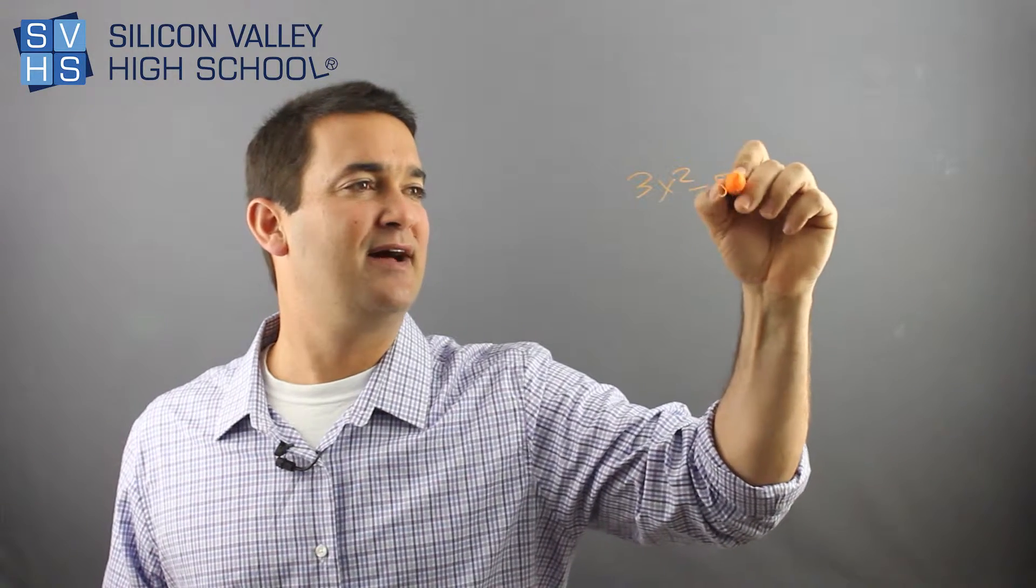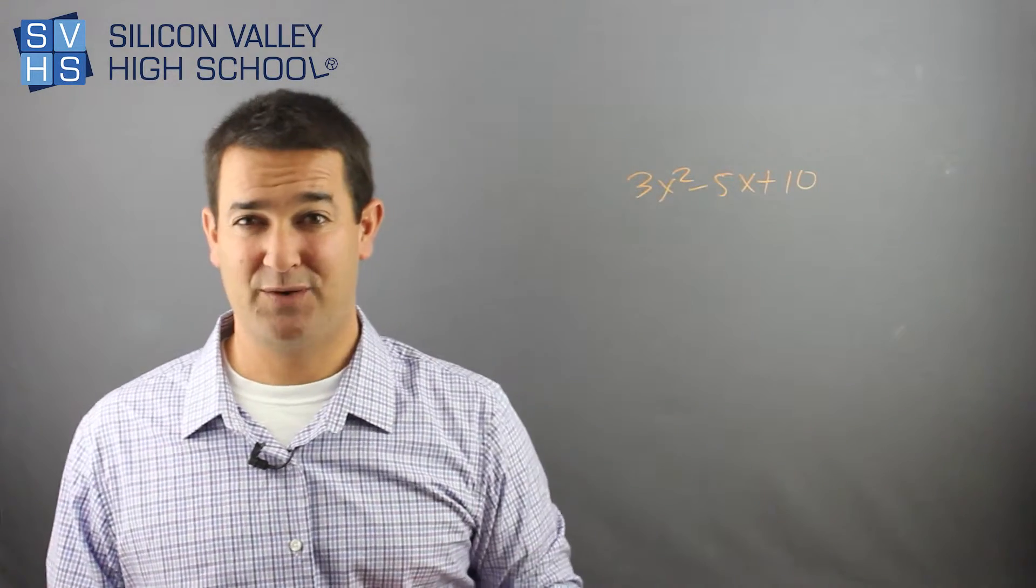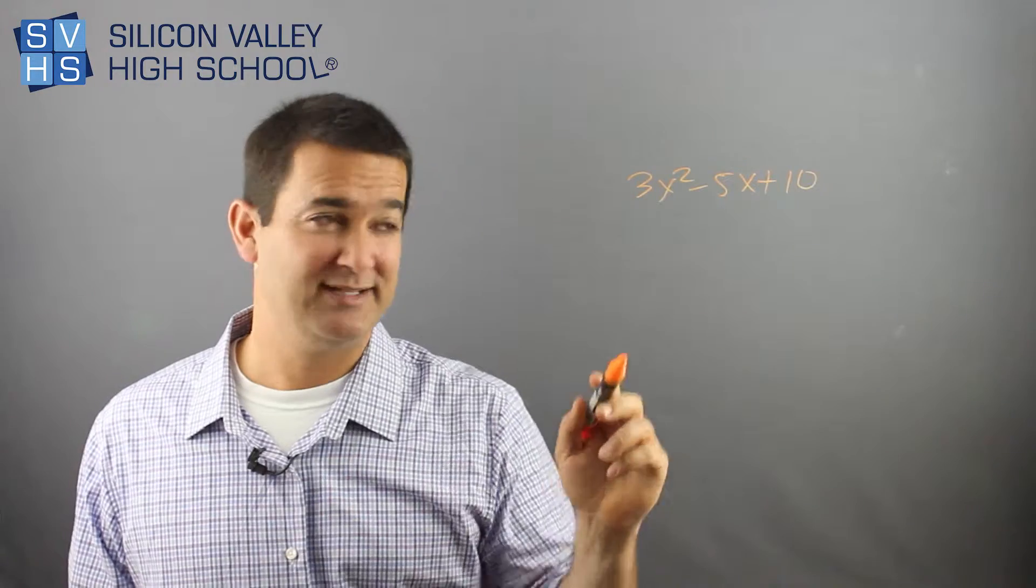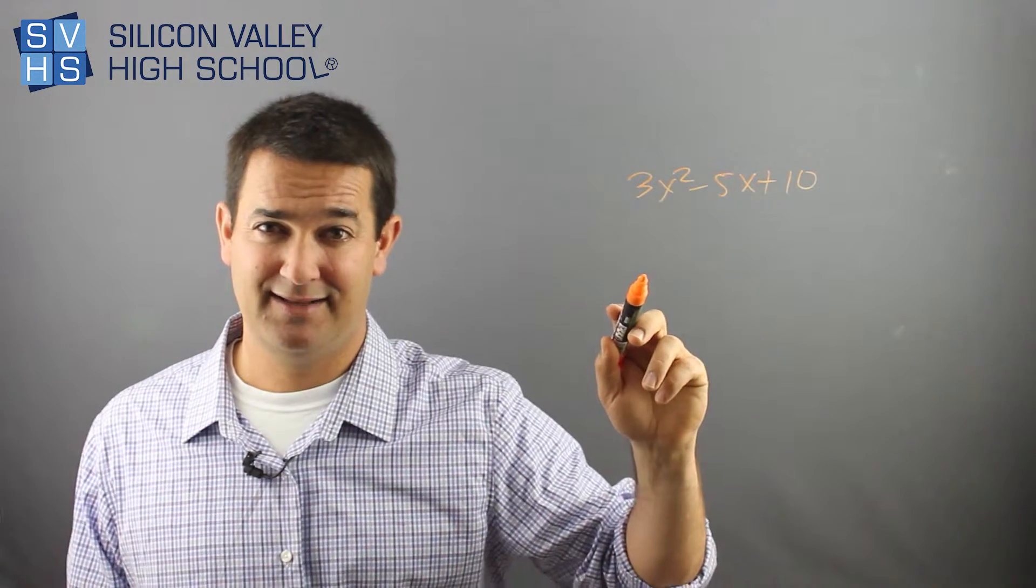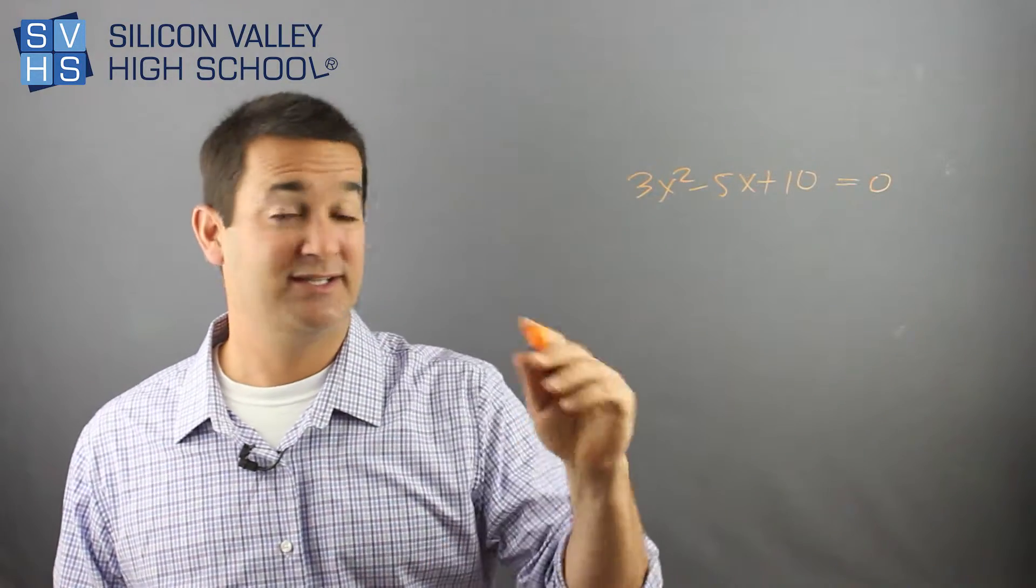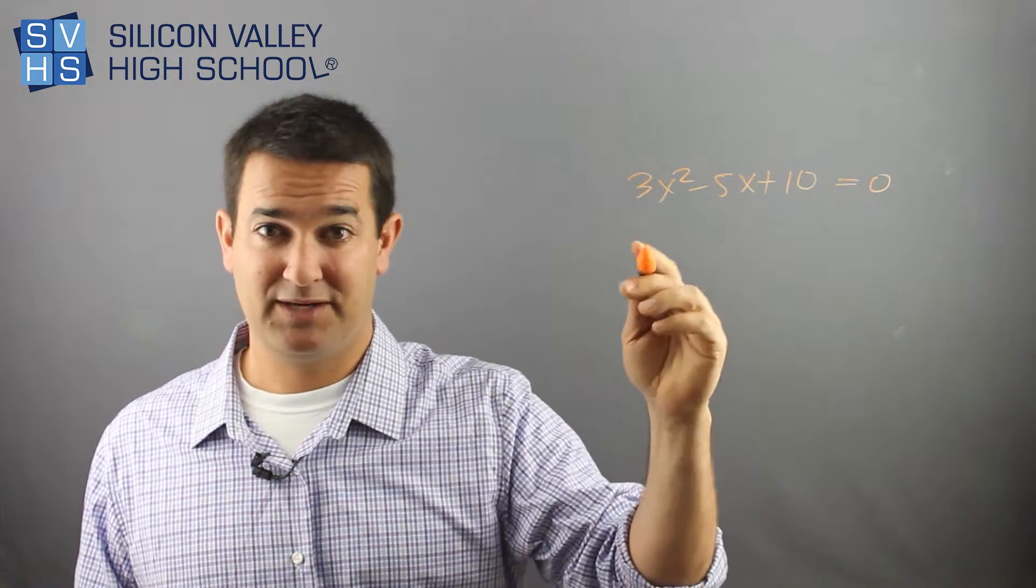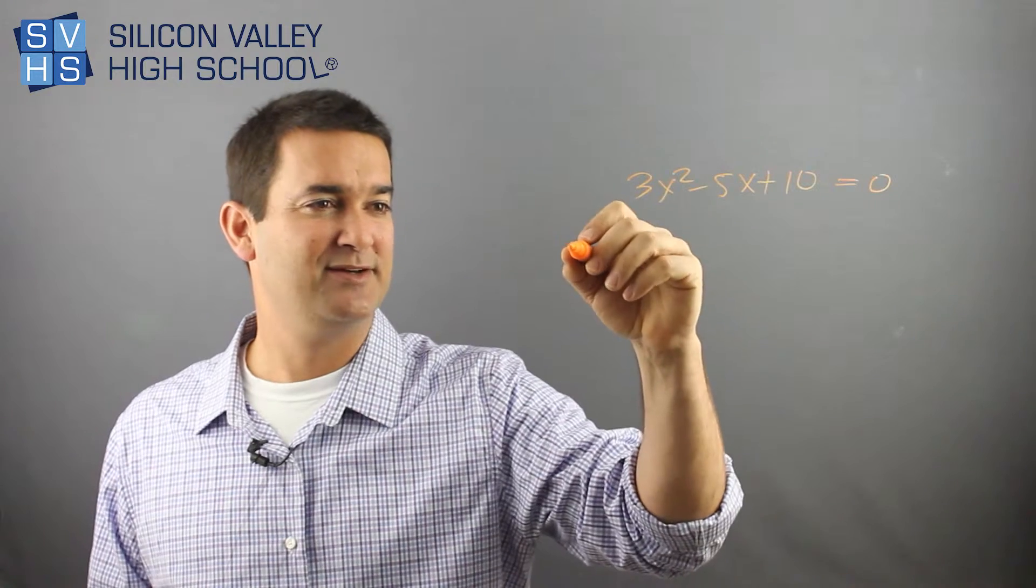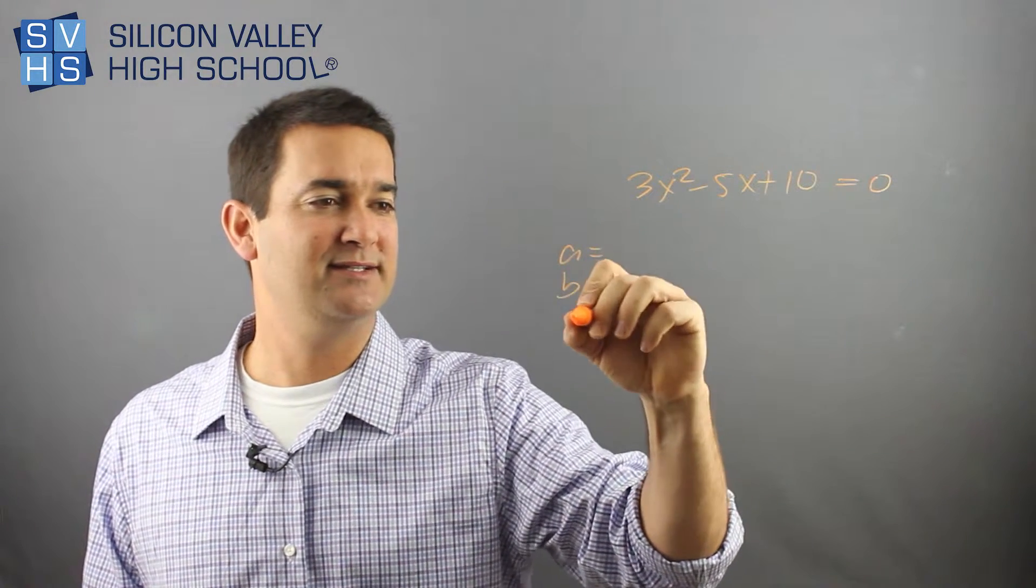3x squared minus 5x plus 10, or something totally random. This is a good example because, don't even lie, you can't factor that. That's way too hard to factor. So I wouldn't even try to factor that, equals zero. I would actually know, out of the gates, this is impossible, so I'm going to do a quadratic formula. So a, b, and c.